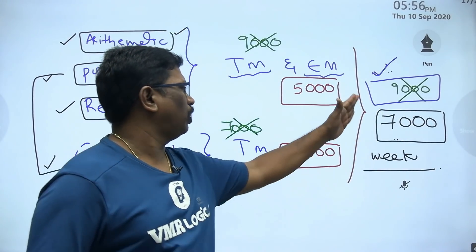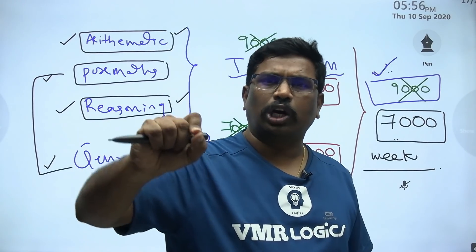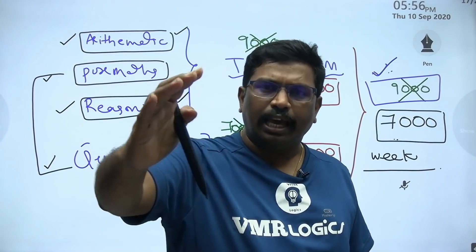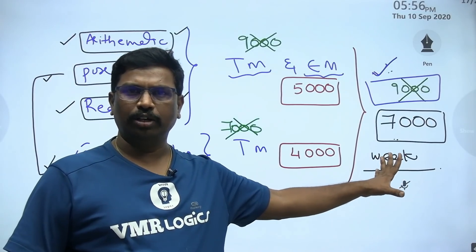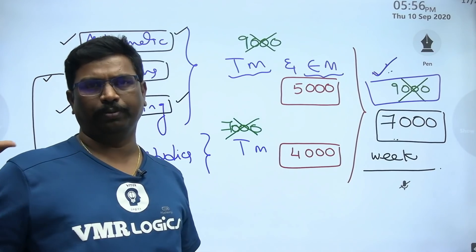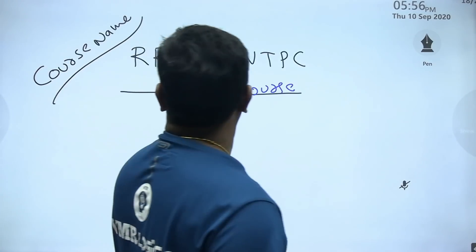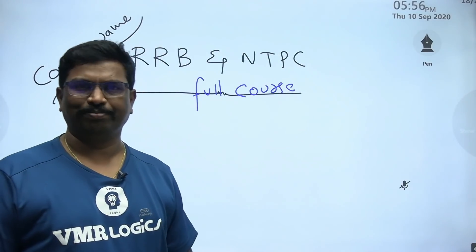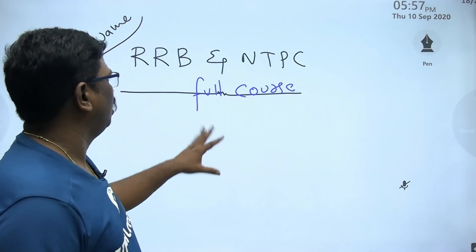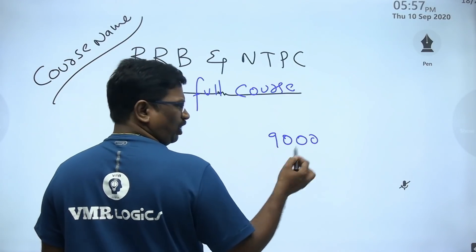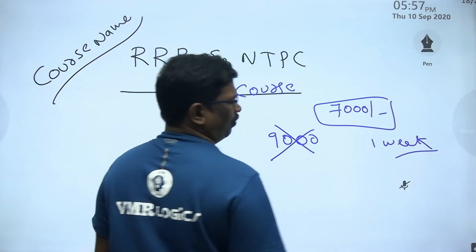Course fees are ₹9,000. But for the first week, there is an early bird offer. One week after launch, the course fee becomes ₹9,000 standard. This early bird offer is active now — the RRB NTPC Full Course app is available. The course fee is actually ₹9,000; it could be ₹15,000 or higher, but for the early bird it is ₹7,000. Within one week the fee is ₹7,000.